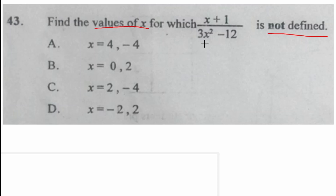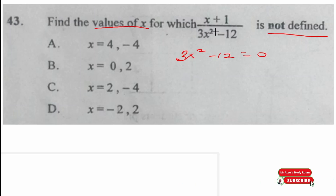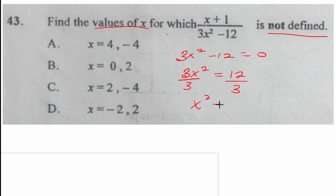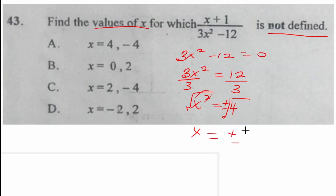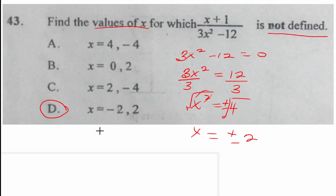Some people might guess by trial and error, but to solve it properly: the expression is undefined when 3x squared minus 12 equals 0. Adding 12 to both sides: 3x squared equals 12. Dividing both sides by 3: x squared equals 4. Taking the square root of both sides — and since a quadratic must have two solutions, we use plus or minus — x equals plus or minus 2. Looking through the options, the answer is option D: negative 2 or positive 2.